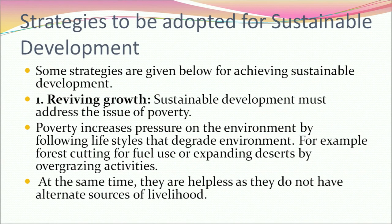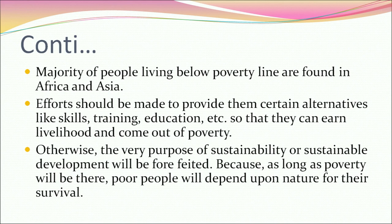Some strategies for achieving sustainable development: First, reviving growth — sustainable development must address poverty, as poverty increases pressure on the environment through activities like forest cutting for fuel or overgrazing. People are helpless without alternative sources of livelihood. The majority of people living below the poverty line are in Africa and Asia. Efforts should be made to provide alternatives like skills training and education so they can earn livelihoods, because as long as poverty exists, poor people will depend on nature for survival.